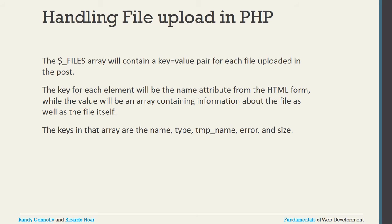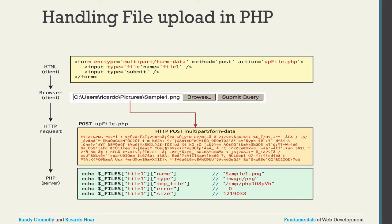When a file is uploaded, the $_FILES array contains a key-value pair for each file in the POST request. The key for each element is the name attribute from the HTML form, while the value is an array containing information about the file. The keys in that array are: name, type, tmp_name, error, and size.